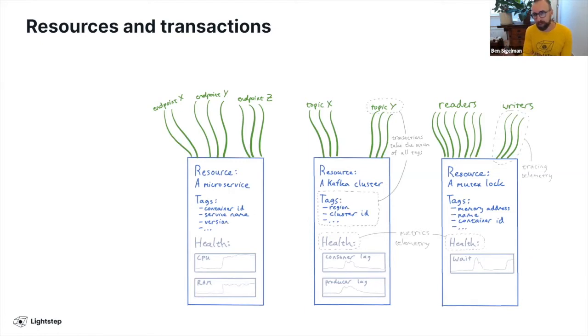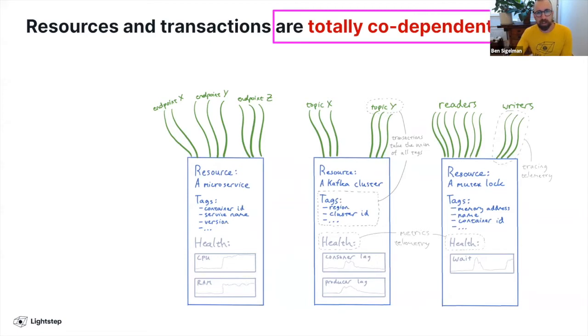That join is very difficult because there's a huge amount of data on both sides of this duality of transactions and resources. On the human side, which is possibly more interesting, these things are totally codependent. If you have an unhealthy resource, then all the transactions going through it become unhealthy.